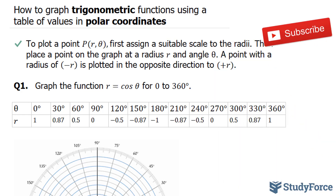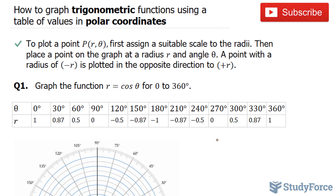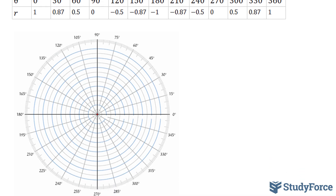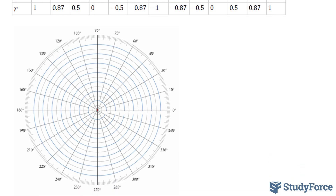Now that I've filled out my table, the next thing I'll do is analyze my radii. Notice that my radii range from negative 1 to positive 1. Since we don't want to work with negative radii, we'll take the range from 0 to 1. The polar chart paper that I have I'll break down into intervals that will lead me to positive 1, and we don't want any negative radii here.